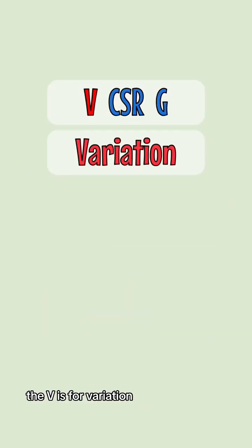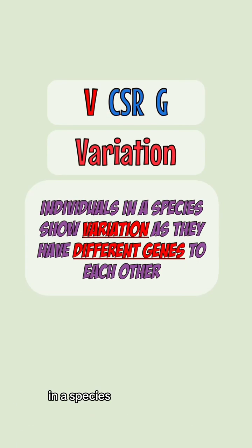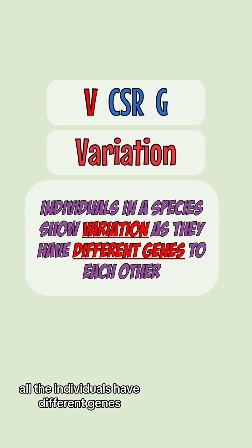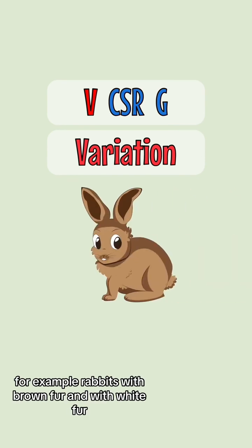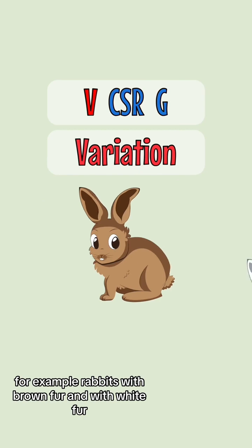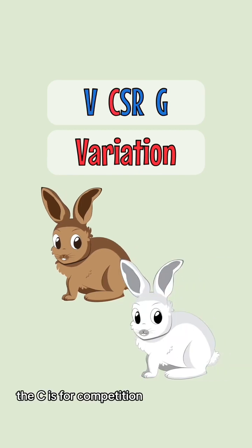The V is for variation. In a species, all the individuals have different genes which makes them different to each other. For example, rabbits with brown fur and with white fur.